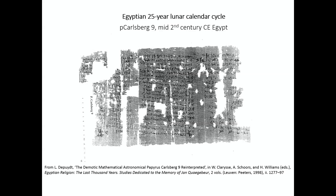Very much later, in the Roman period, the mid-2nd century CE, we have this document, which again is neatly laid out. It's very damaged and perhaps difficult to see, but it's quite neatly structured. Again, it's not a full calendar of the year. All it is really is a scheme, a set of data to enable the calculation of a full 25-year cycle.